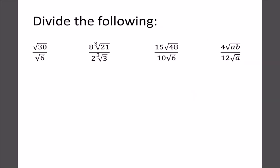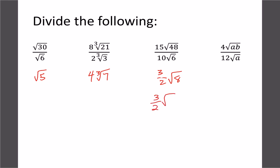Quick examples: root 30 over root 6 — 30 divided by 6 is 5, so the answer is root 5. Cube root 8 divided by 2 is 4, and 21 divided by 3 is 7 — done. Next: 48 divided by 6 is 8 root 8 over root... and for 15 over 5 we simplify the fraction to 3/2. But we can still simplify root 8 into 4 and 2, so root 4 is 2, and 3/2 times 2 is just 3. Always simplify if you can — the first two were already fully simplified.